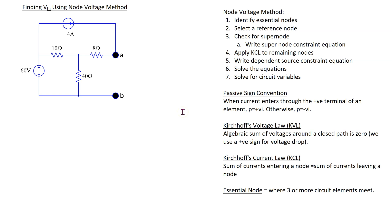This is the circuit of interest obtained by removing the load resistor, and now the open circuit voltage between terminals A and B is the voltage V_Thevenin that we wish to find. Any circuit analysis method can be used to find V_Thevenin. Here we are going to use the node voltage method.